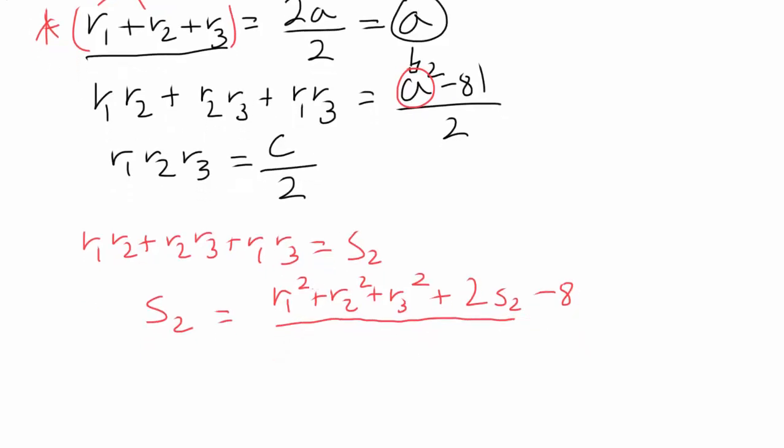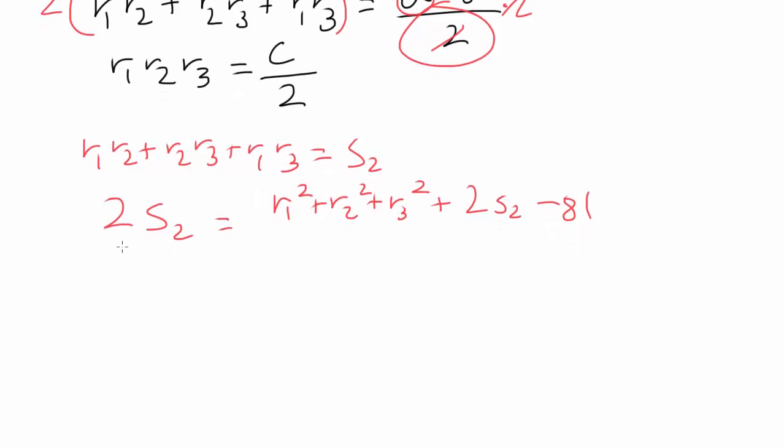Instead of dividing by 2, let's just multiply 2 to both sides. So you have 2 times S₂ on both sides, and they're going to cancel out. And moving 81 to the other side gets us r₁² + r₂² + r₃² = 81.